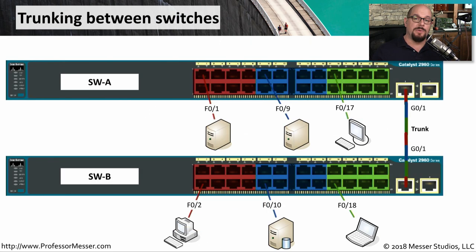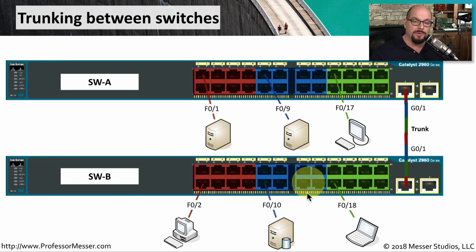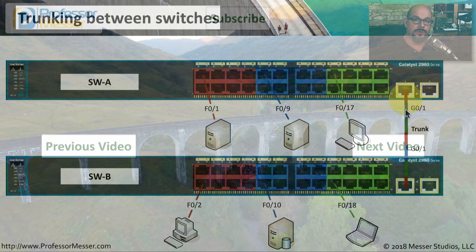Here's the example of a well-segmented network where you have multiple VLANs, all existing on multiple switches. You have a red, a blue, and a green VLAN, with devices on each of these switches that are members of those VLANs. These devices are able to communicate with other devices on their same VLAN by communicating across one of these 802.1Q trunks.